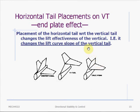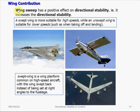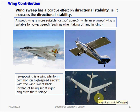Another factor affecting directional stability is the placement of the horizontal tail with respect to the vertical tail. When the horizontal tail is moved up or down, the vertical tail's effectiveness to generate side force changes — it depends on where the horizontal tail is mounted on the vertical tail. Wing sweep also helps increase aircraft directional stability, although the effect is small compared to the vertical tail. An aircraft with a swept-back wing has higher directional stability, making it suitable for high-speed flight.